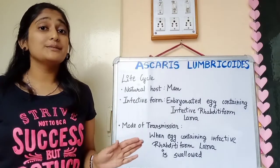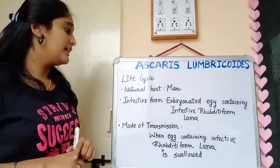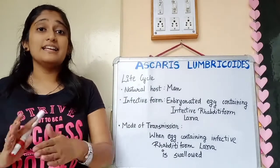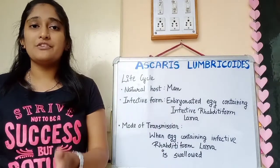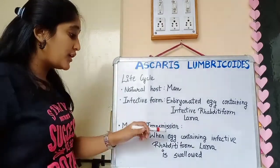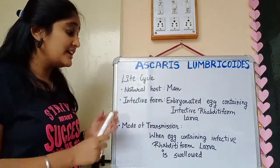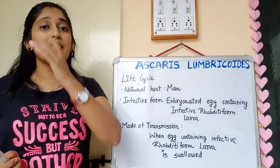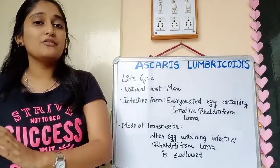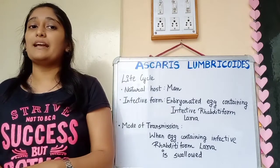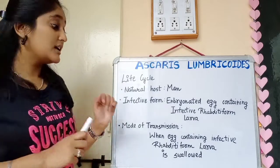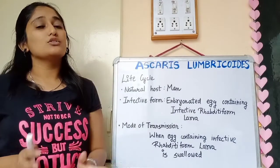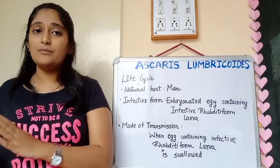There is no intermediate host — only one host, which is man. The infective form is an embryonated egg containing an infected rhabditiform larva. The mode of transmission is ingestion: when eggs containing the infected rhabditiform larva are swallowed by man.